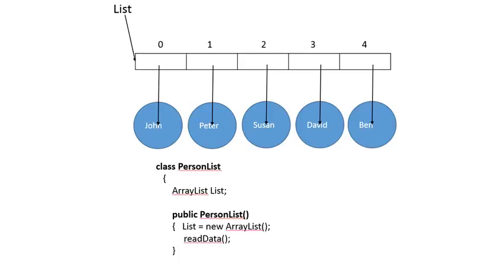Before I discuss singly linked lists, I want to refresh what an array list is. What we have here is an array list of objects, but if you look at the actual array, it simply stores pointers to objects. So we've got five students — John, Peter, Susan, David, and Ben — that are separate objects. The array has five pointers pointing to each one of these objects, and the array is pointed to by a pointer called list. List is simply a pointer which points to an array list. The array list doesn't really contain students; it's simply placeholders for pointers pointing to students.